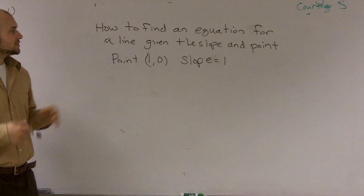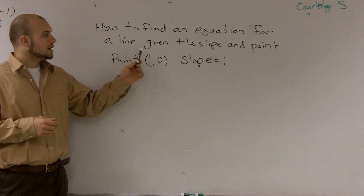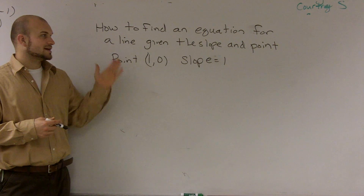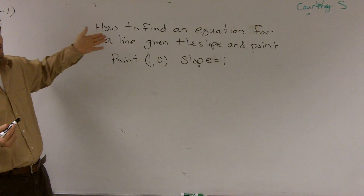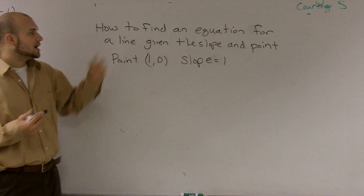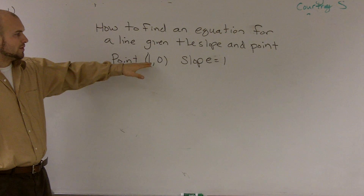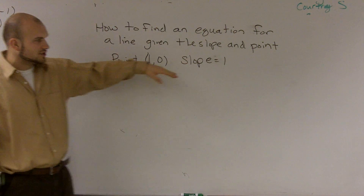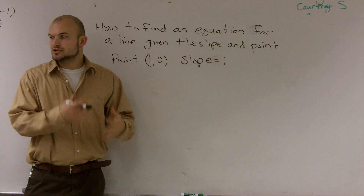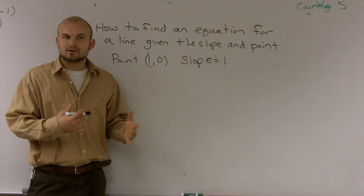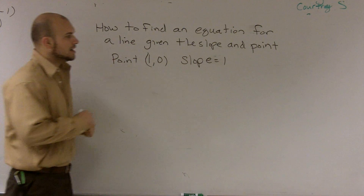What I'd like to do is show you guys how to find an equation for a line through a point, given the slope. They've given you a point, 1 comma 0, and a slope of 1. I'm going to show you this graphically, and I'm also going to show you how to do it algebraically.